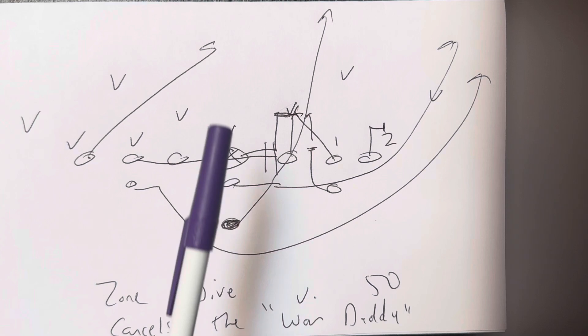But you get the ball away from the zero. So the problem Paul used to have running inside Veer was handling the zero tech. You don't worry about that anymore. Because he's not gonna, where's he gonna go? So, yeah.